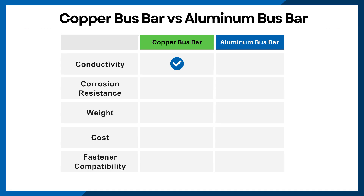If you're looking for superior electrical conductivity, then copper is the better choice. If you have two bus bars of the same size, one made of copper and the other made of aluminum, the copper bus bar will carry more current than the aluminum one.